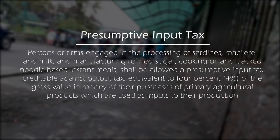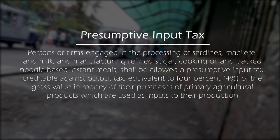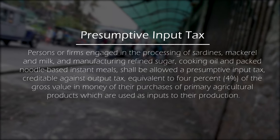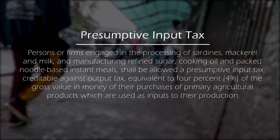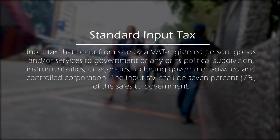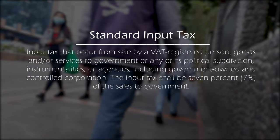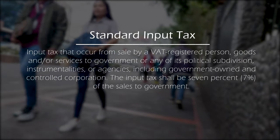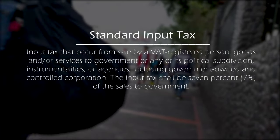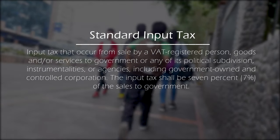For presumptive input tax, as the term suggests, because of the nature of products produced, we cannot exactly determine the actual input tax attributable to the processing of products — such products like sardines, mackerel, milk, refined sugar, and packed noodle-based instant meals, among others. Lastly, standard input tax refers to input taxes in connection with government sales, including sales to any political subdivisions, instrumentalities, or agencies, including government-owned and controlled corporations. It shall be computed as 7% based on the sale to government.